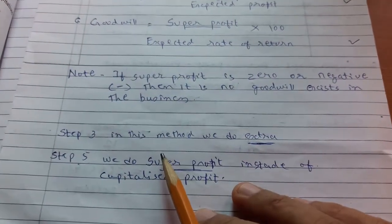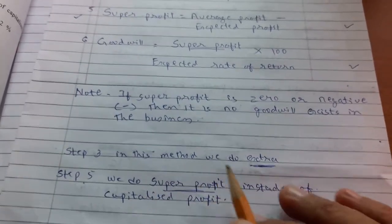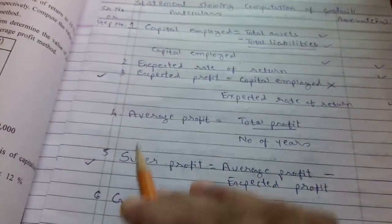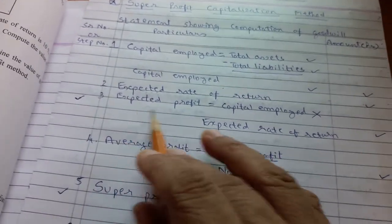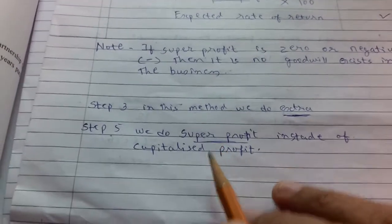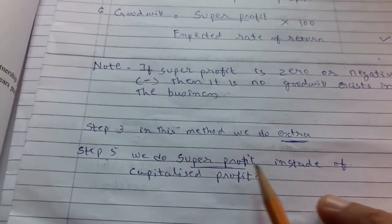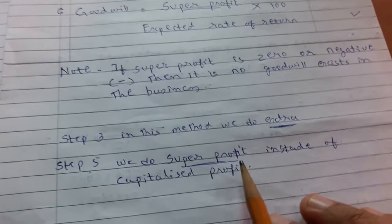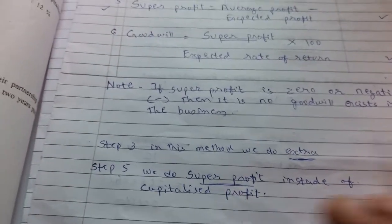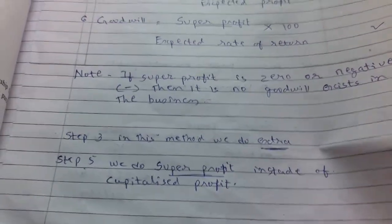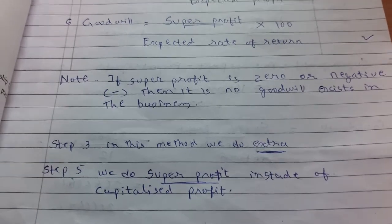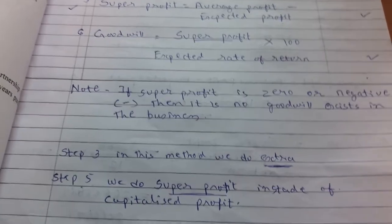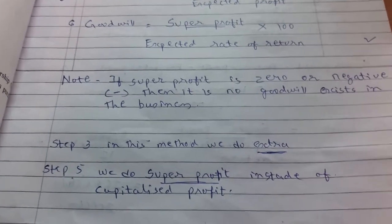What is the difference between the capitalization method and the super profit capitalization method? The first difference is step number 3 — in this method we calculate expected profit. The second difference is that here we use super profit in the formula instead of capitalized profit. In the capitalization method we used capitalized profit; here we apply the formula using super profit. Keep these two differences in mind, and when solving an example make sure which method is asked so that the statement is prepared accordingly.